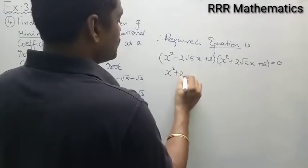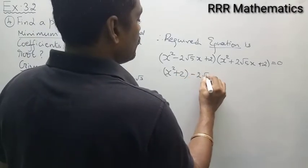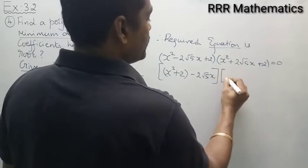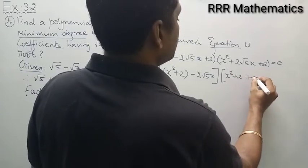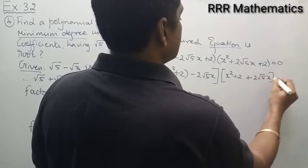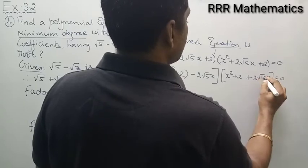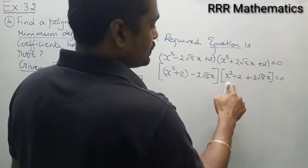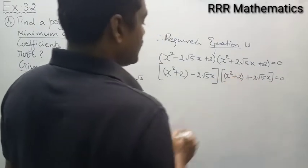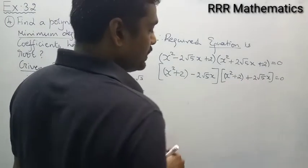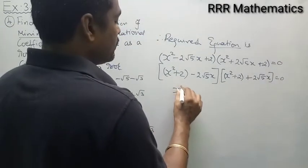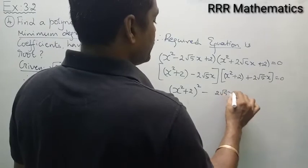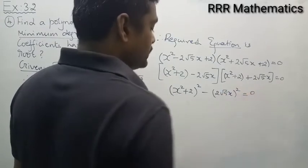I will consider (x² + 2) - 2√5·x multiplied by (x² + 2) + 2√5·x, equal to 0. This is of the form (a - b)(a + b) = a² - b². So a = (x² + 2) and b = 2√5·x. Therefore it gives (x² + 2)² minus (2√5·x)² equal to 0.